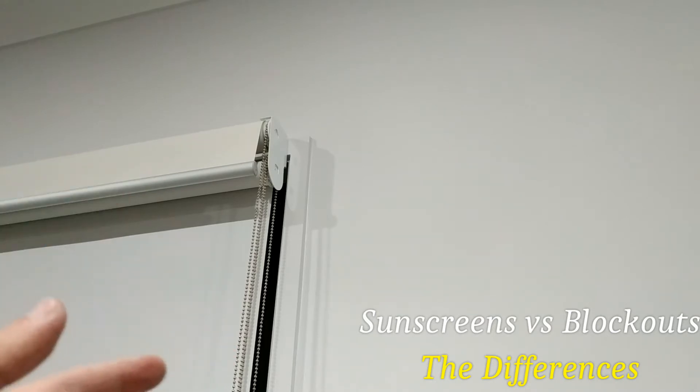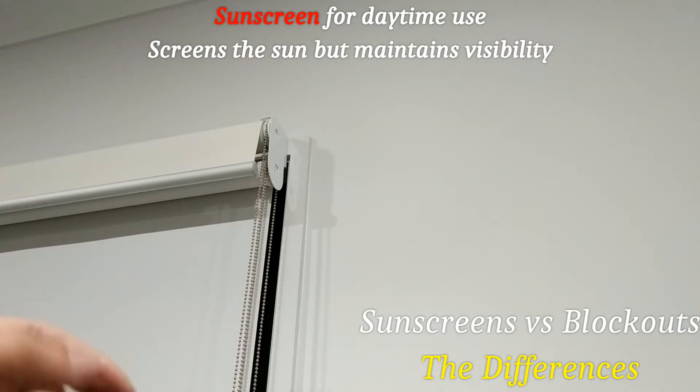The sunscreen, as the name implies, blocks out the sun. So when it's daytime, you would have the sunscreen down, but you're still able to see outside because there's little holes in the sunscreen type of blind.